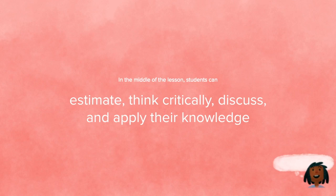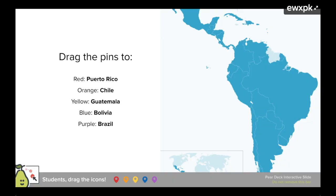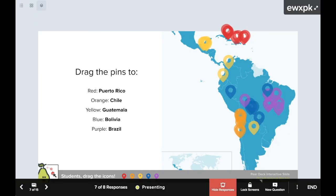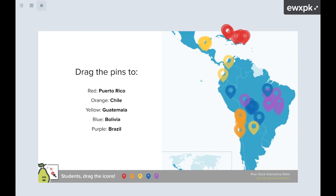In the middle of your lesson, you can get students engaged in your material by encouraging them to estimate, think critically, discuss, and apply their knowledge with Pear Deck interactive questions. Each time you prompt students, you're also doing a formative assessment and gathering instant insight into how they're getting it. This is a Pear Deck draggable slide, as you can see by the bar at the bottom of the slide. Students are moving the draggables on their own screens, and you can imagine how easy it is to get a picture of what everyone is thinking, even in a class of 30 students or many more.